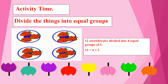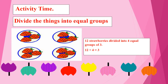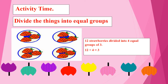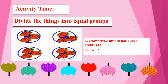Okay children, this is your activity time. In this activity you have to divide things into equal groups. As you can see in the pictures, there are 12 strawberries and they are divided into four equal groups of three. Okay, so let's see another slide.